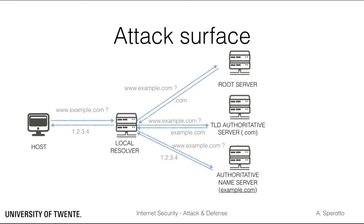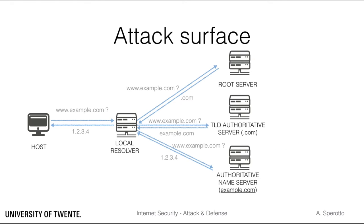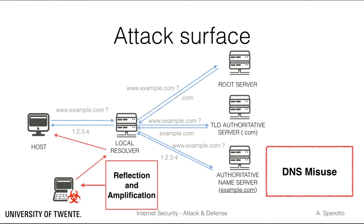In practice, we have seen that attacks on the DNS information are not the only possible ones. There have been cases in which the infrastructure of the DNS has been attacked, by using DDoS attacks for example. Last, there are attacks that do not target the DNS directly, but that misuse its functionality. Think for example of reflection and amplification attacks based on DNS.